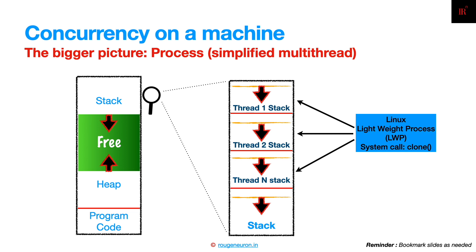Each thread has its own stack, which is limited by definition — it cannot exceed a fixed size. On Linux, the default thread stack size is around 8 KB. You can check it via the man pages or documentation for whatever operating system you're working on.